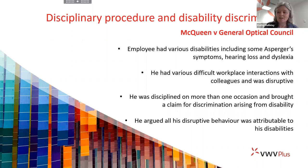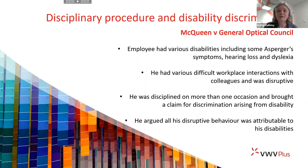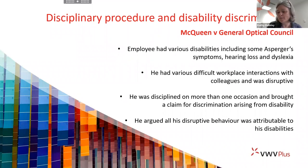The General Optical Council acknowledged the known effects of his conditions and had set support in place — including providing instructions in writing and making physical adjustments to the workplace. However, they argued that his habit of standing up to talk and the way he interacted with colleagues in certain situations did not arise as a consequence of his disabilities — it was just a poor behaviour trait. The tribunal reviewed all of the medical evidence and concluded that the way Mr. McQueen interacted with his colleagues was not something that arose because of his disabilities.